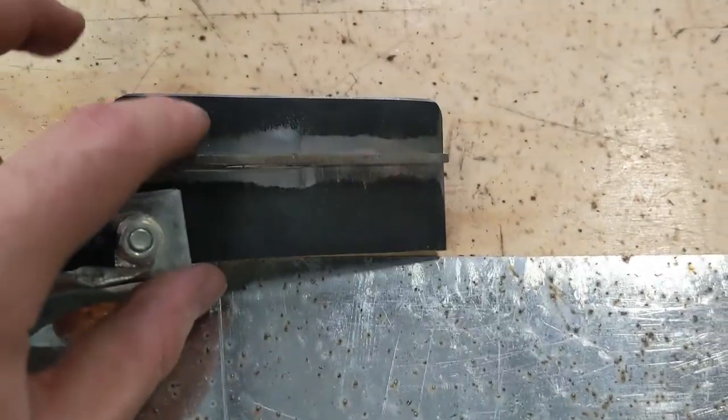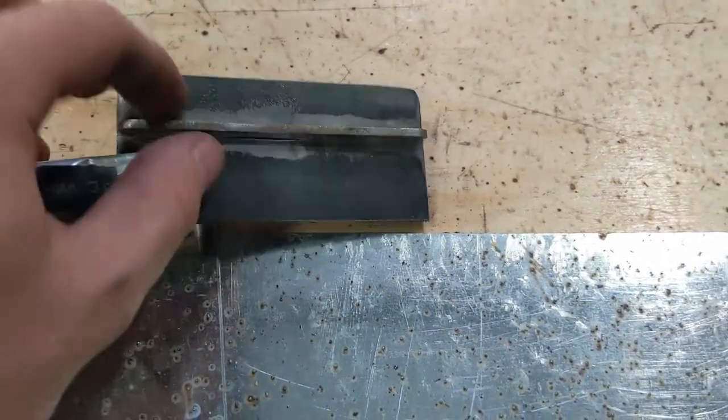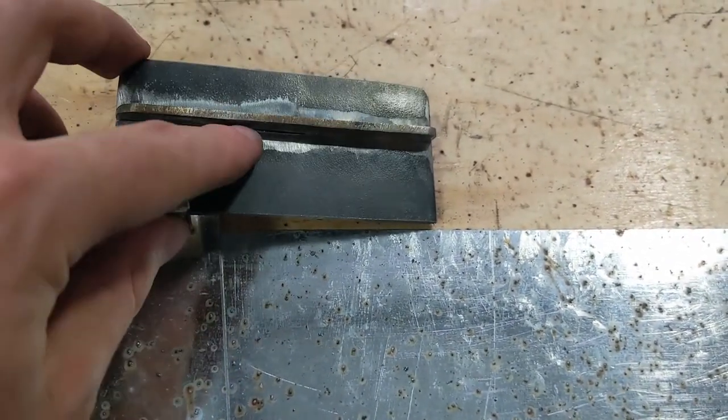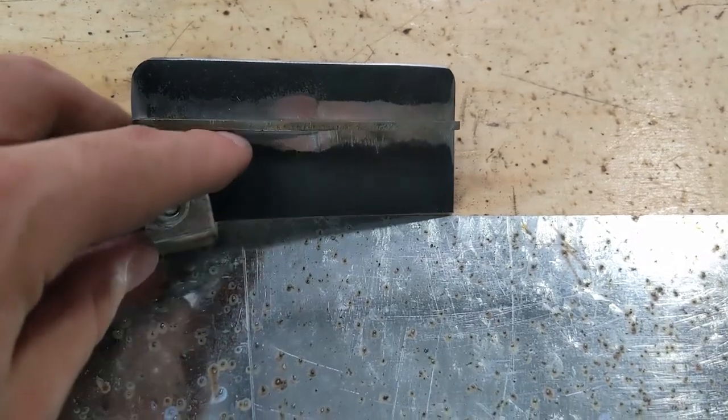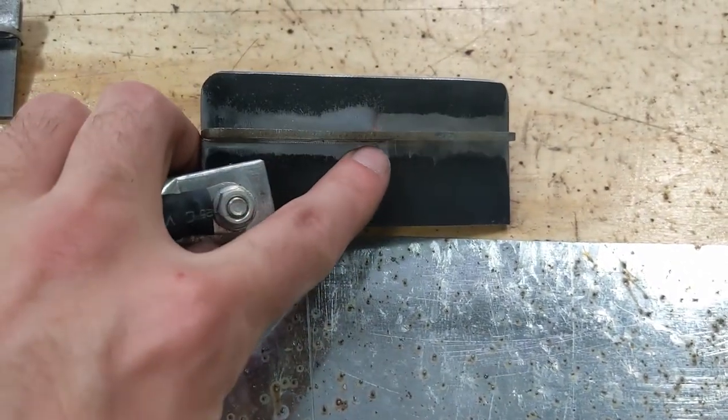I'm making sure to weld on the bottom section. This is a little shorter, and that slot that I cut in the tubing will run right in here, so we don't want that to be filled with weld.